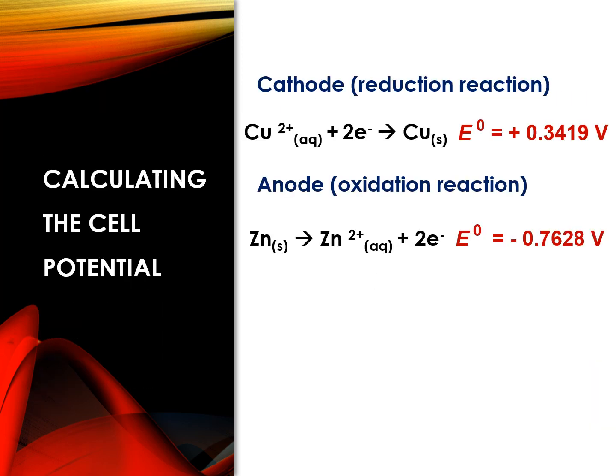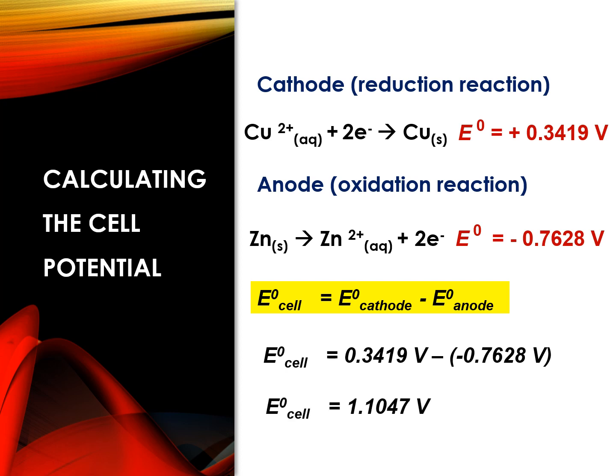Having identified already which reaction is the oxidation reaction and which reaction is the reduction reaction, we can now calculate the cell potential. Thus, E° cell is equal to E° cathode minus E° anode. The cathode is where the reduction reaction occurs while the anode is where the oxidation reaction occurs. Substituting the values, the E° of the cell is equal now to 0.3419 volts minus negative 0.7628 volts. Simplifying, we get positive 1.1047 volts.